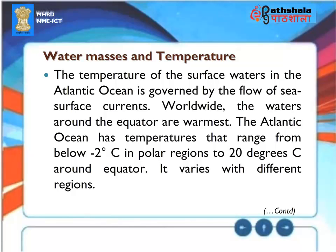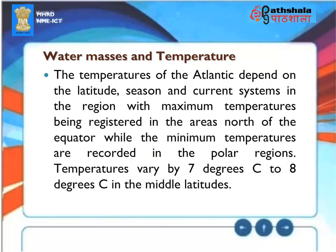Water Masses and Temperature: The temperature of surface waters in the Atlantic Ocean is governed by the flow of sea surface currents. Waters around the equator are warmest worldwide. The Atlantic Ocean has temperatures ranging from below minus 2 degrees Celsius in polar regions to 20 degrees Celsius around the equator. Temperatures vary by 7 to 8 degrees Celsius in the middle latitudes, and depend on latitude, season, and current systems, with maximum temperatures north of the equator and minimum temperatures in polar regions.